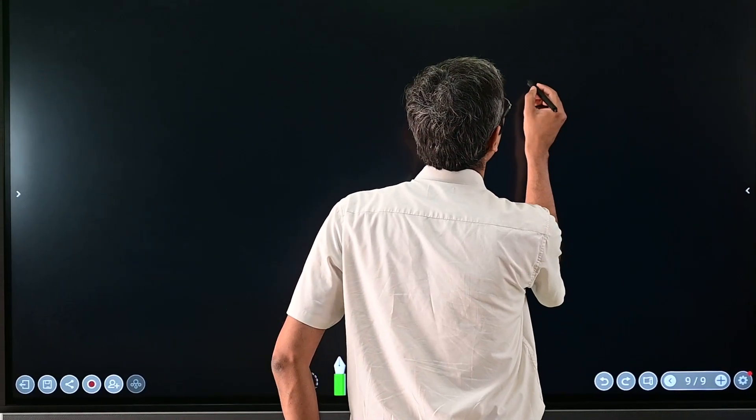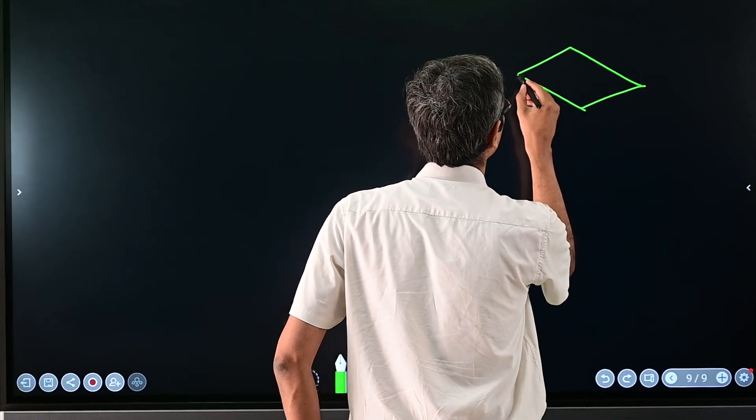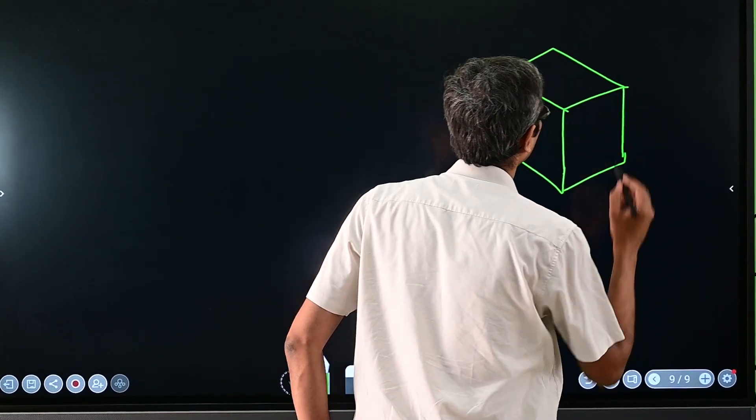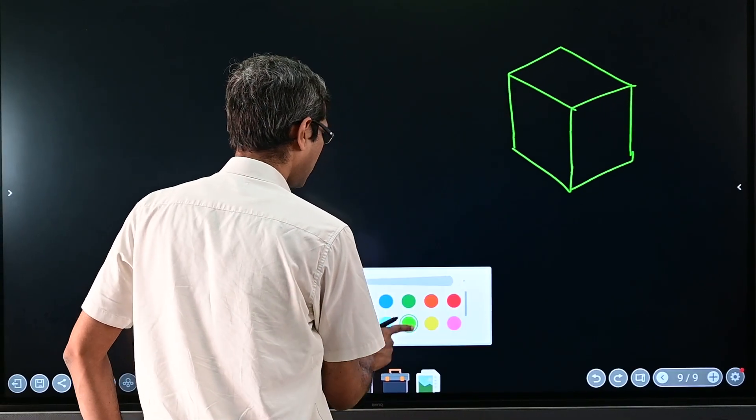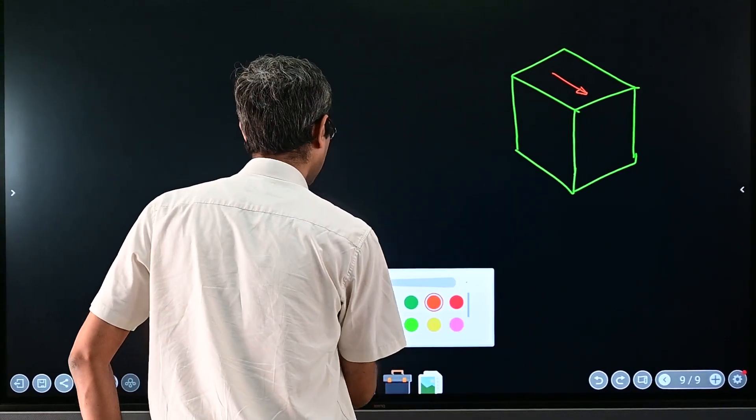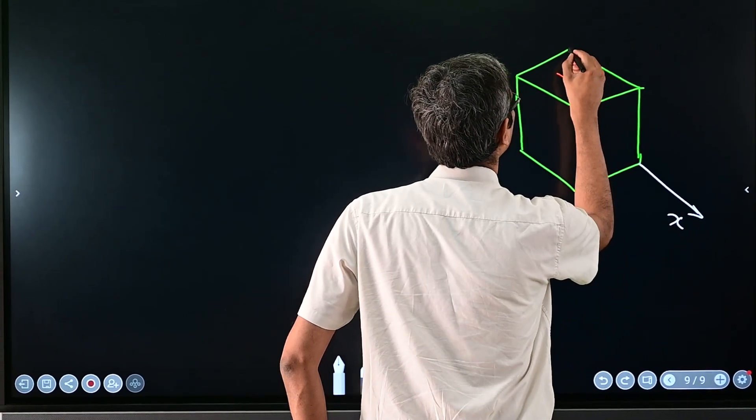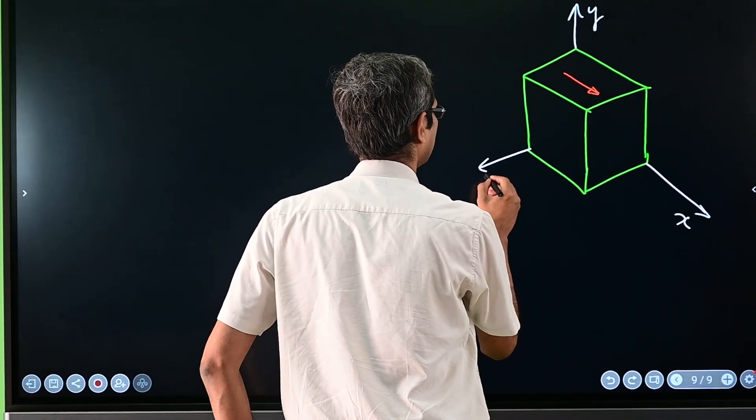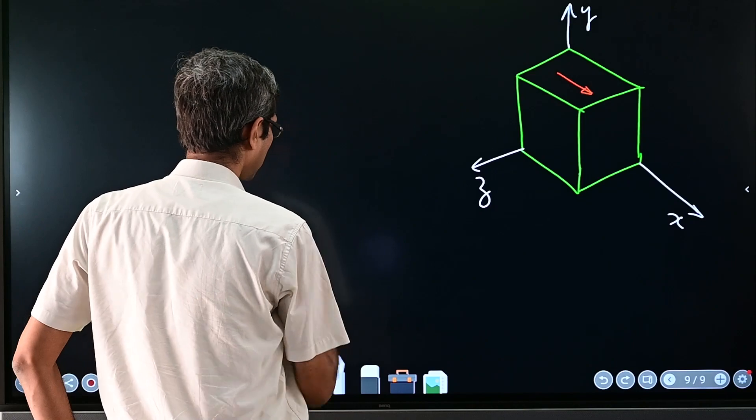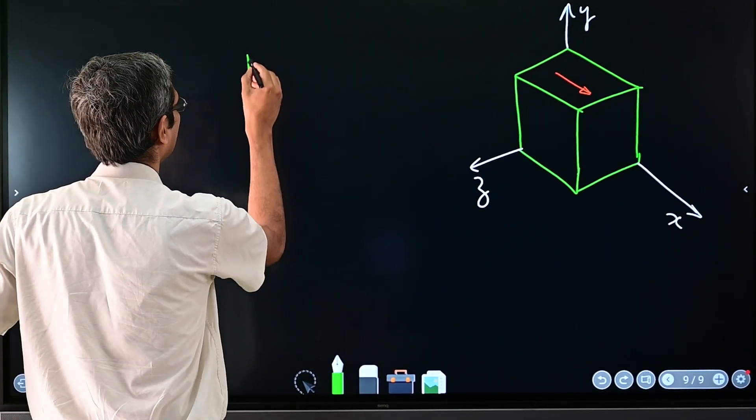For that, let's say you have a cube like that. Let me draw even the axis maybe. Suppose this side is x direction, this side is y and this is z. Let me draw even the side view of this.